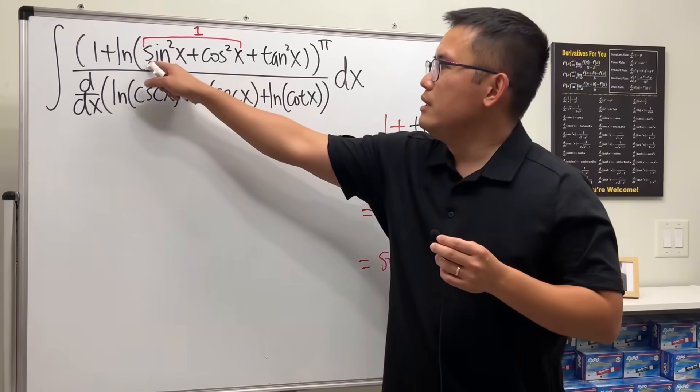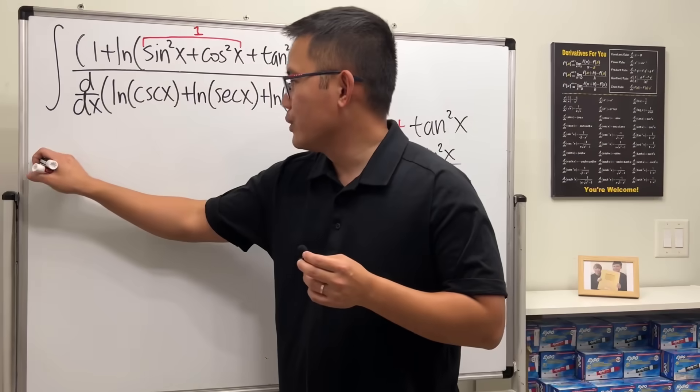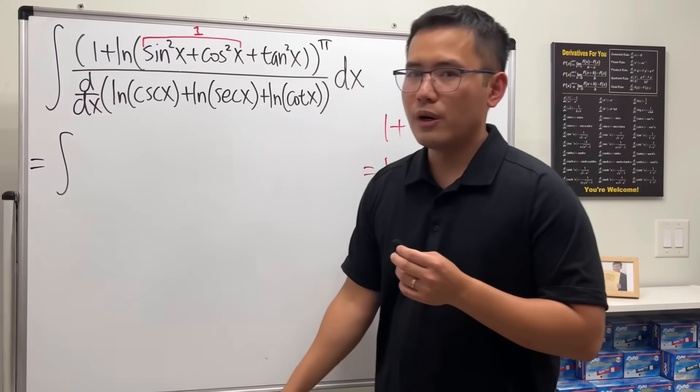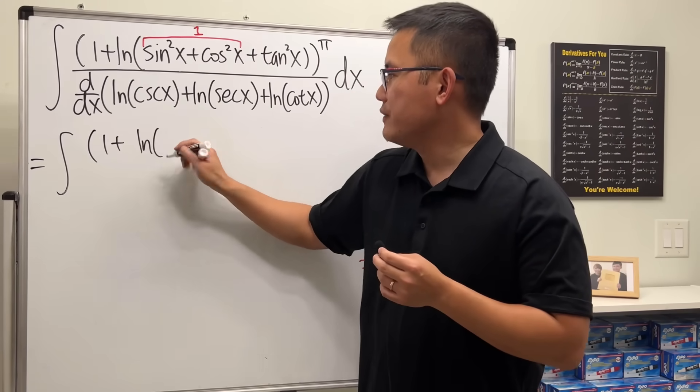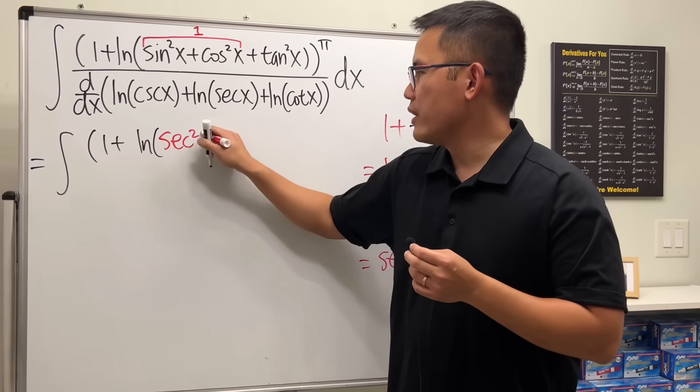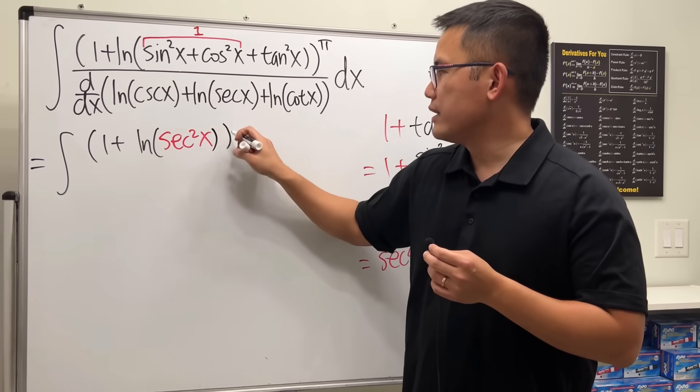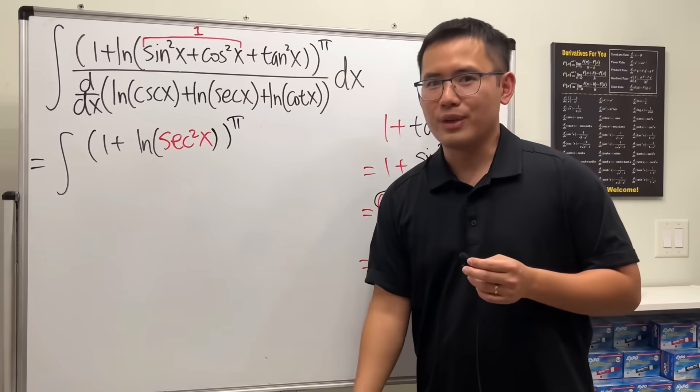So in fact, this whole thing inside is just that. So here we go, this is really just integral, and then we have 1 plus ln of secant squared x, and then raised to the pi's power, yeah, to the pi's power, why not?